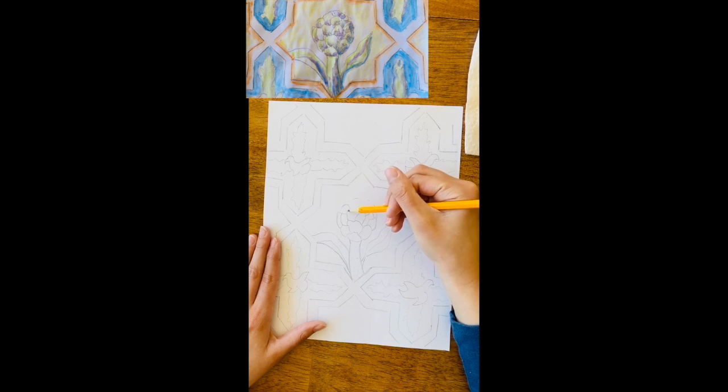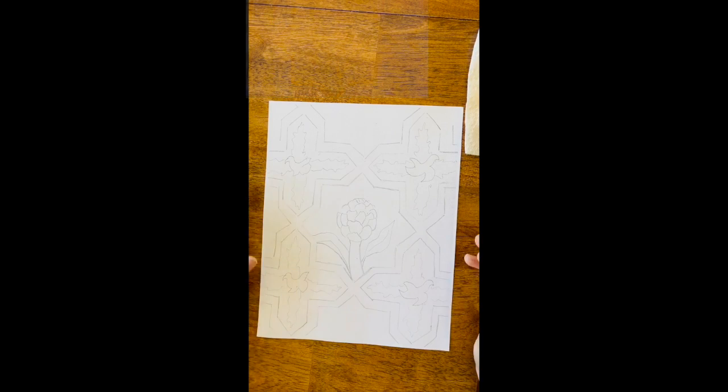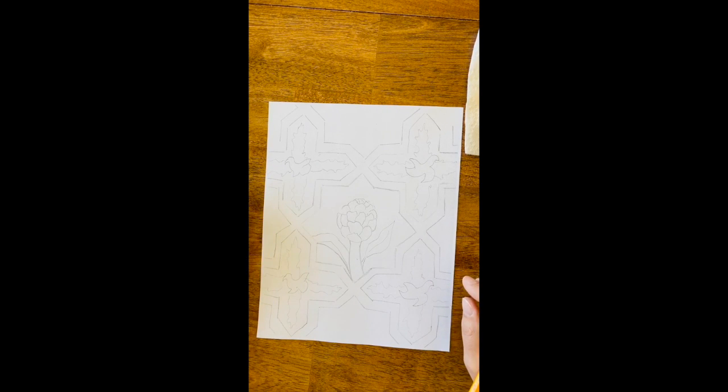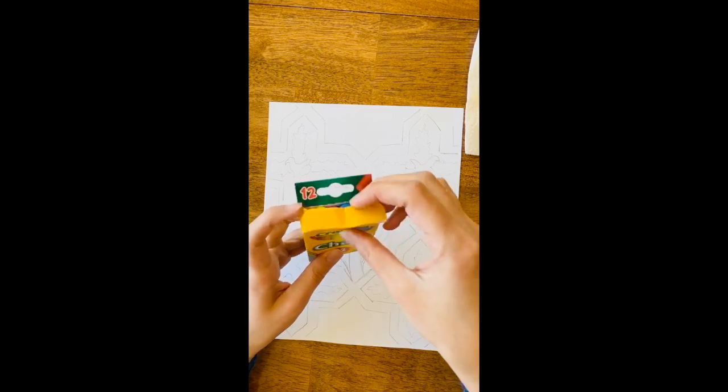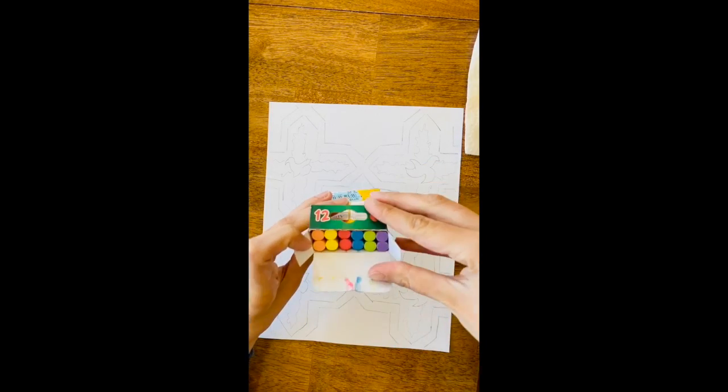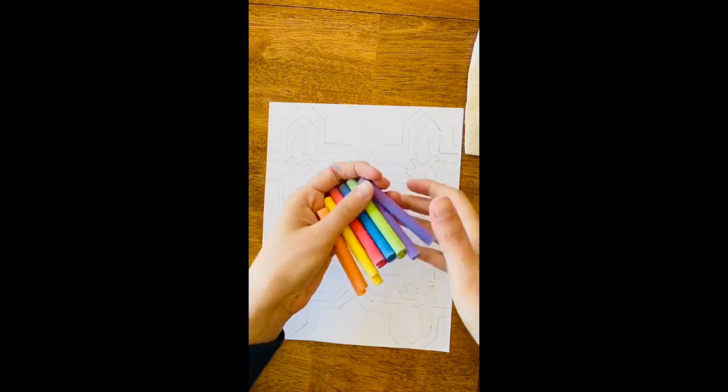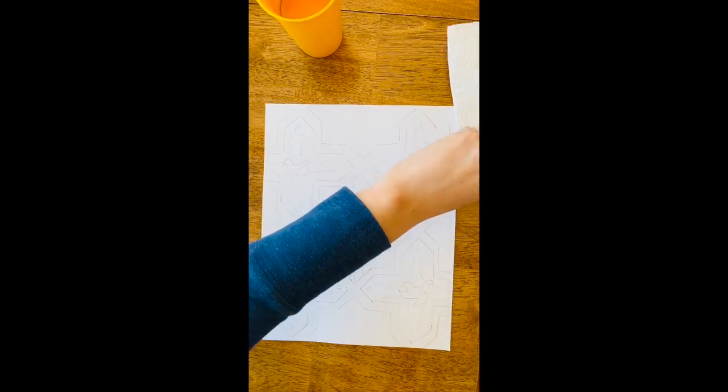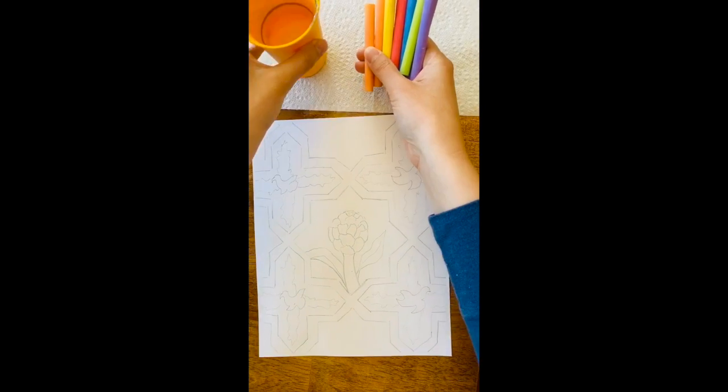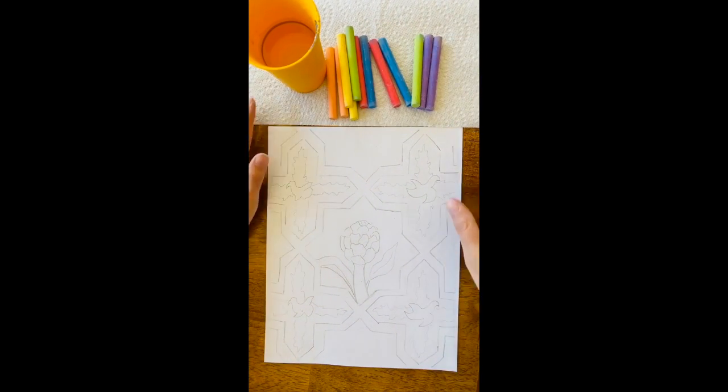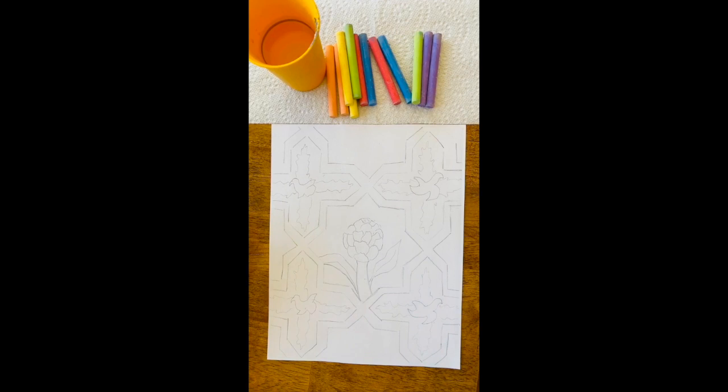So now what I'm going to do is I'm going to grab some sidewalk chalk. So I have a packet here that I'm going to use. Now if you don't have sidewalk chalk and if you have possibly some watercolors, you can use those instead. Or if you don't have any of those, go ahead and grab some crayons or some colored pencils. Anything will do, we just need some color.